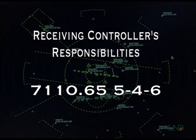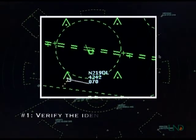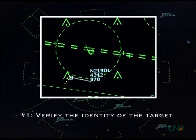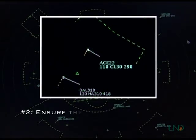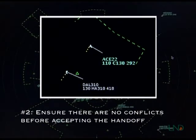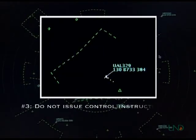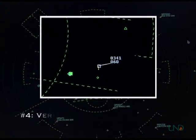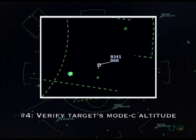The receiving controller has four responsibilities. First, the identity of the target must be confirmed, either by observing the target at the location stated by the transferring controller if using a manual handoff, or by observing a data block associated with a target if using an automated handoff. Second, before accepting the handoff, the receiving controller must ensure that the aircraft entering his or her airspace will not conflict with any other aircraft. Third, any control instructions issued before the aircraft enters the receiving controller's airspace must be coordinated unless specified in a letter of agreement or facility directive. Finally, the target's mode C altitude must be verified.